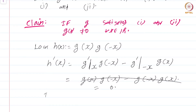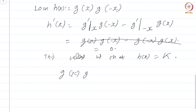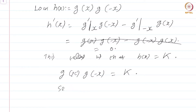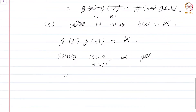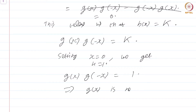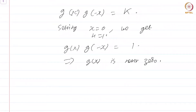So h(x) is a constant k, which means g(x)·g(−x) = k. Setting x = 0, we get k = 1. Therefore g(x)·g(−x) = 1, which means g(x) is never 0. This proves the claim that any function satisfying properties 1 and 2 is never 0.